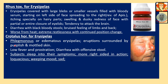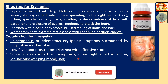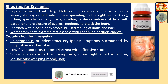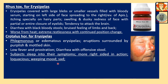Crotalus Horridus for Erysipelas: Phlegmonous or edematous Erysipelas; eruptions surrounded by purplish and mottled skin. Low fever and prostration. Diarrhea with offensive stool. Subjects sleep into their symptoms. More right-sided in action. In low cases, weeping mood and sadness.